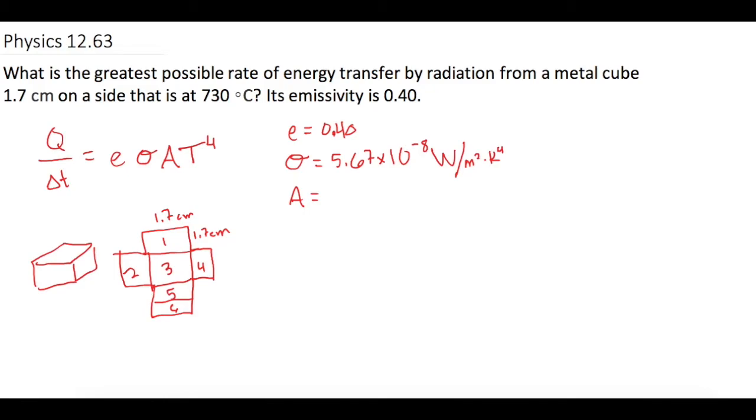So let's put them into meters first. So we have 0.017 meters times 0.017 meters. And that gives us 0.000289.